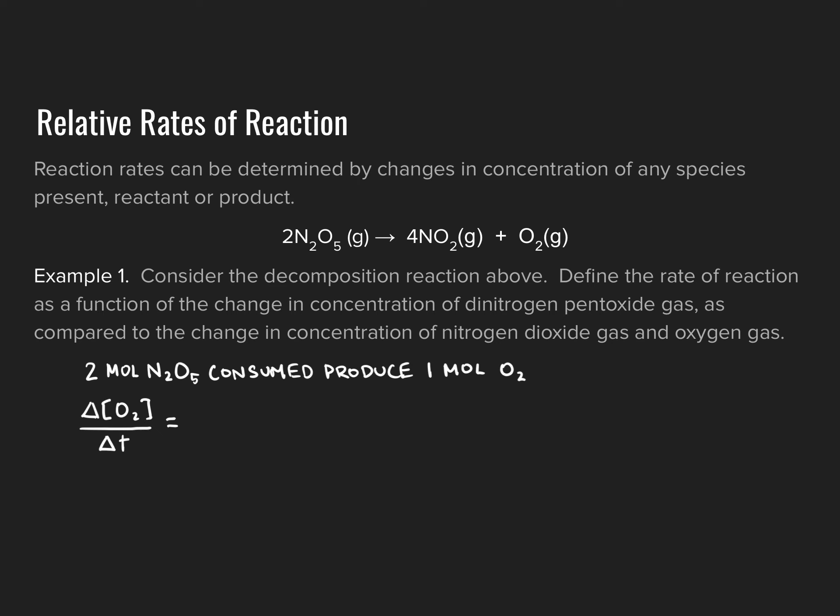I can set up a mathematical expression showing that the rate of change in concentration of O2 with respect to time — Δ[O2]/Δt — would be equal to one-half times the rate of change in concentration of N2O5 — Δ[N2O5]/Δt. Recognizing that N2O5 is decreasing in concentration while O2 is increasing, I need to put a negative in front of the Δ[N2O5] term to make those two expressions equal to one another.